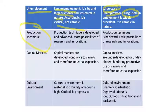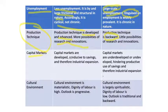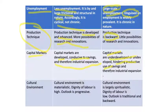Then production techniques — in developed economies, advanced techniques and research and innovations are used. In the case of underdeveloped countries, backward production techniques are used. Capital markets in developed economies are well-developed, conducive to savings, and therefore industrial expansion is possible. In the case of underdeveloped countries, capital markets are underdeveloped, hindering the productive use of savings and therefore industrial expansion.